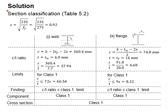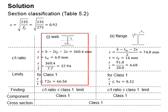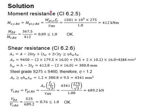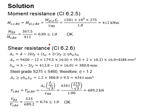Next, perform section classification based on Table 5.2. Going through the classification process for the web and flange, the entire section is found to be Class 1. Determine the moment resistance based on clause 6.2.5. The moment capacity is found to be 412 kilonewton-meters, which is greater than the applied moment load. Therefore, it is considered acceptable.